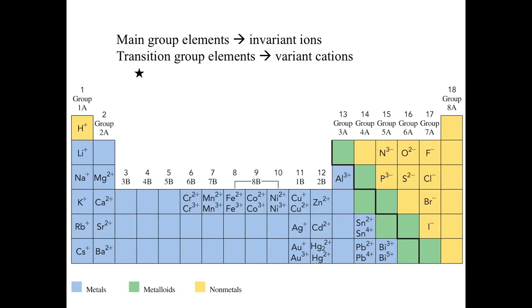Let's recap what we have talked about so far. We talked about the main group elements, when they become ions, they will be invariant ions. If you're in group 1A and group 2A, you are a main group element of metals. So you will always have the same charge. Group 1A will always have positive 1. Group 2A will always be positive 2. And if you are in group 7A, you are always negative 1. Group 6A, you are negative 2. Group 5A, you are negative 3. You will never change. That's why it's called invariant.